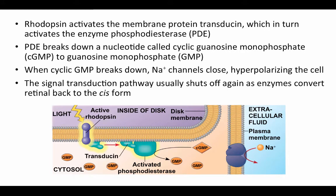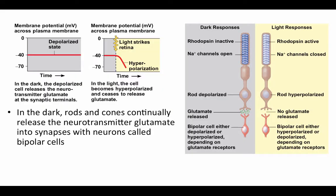The signal transduction pathway shuts off again as enzymes convert retinol back to the cis form — it doesn't need a different wavelength of light like we saw in phytochromes; normal enzymatic activity converts retinol back. In the dark, the membrane potential is steadily around negative 40 millivolts, and the neurotransmitter glutamate is released by the photoreceptor. The rod cell in the dark has open sodium channels, is depolarized, and releases this glutamate to the bipolar cell — the first neuron in line in this chain of neural signaling from the retina.